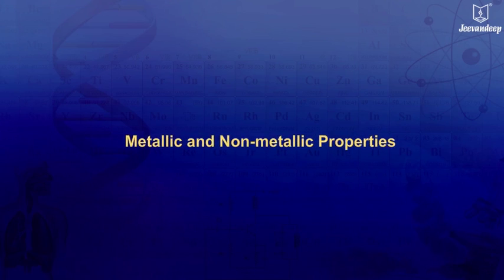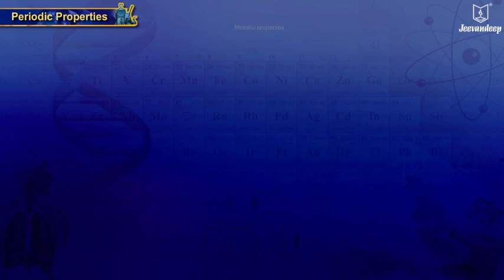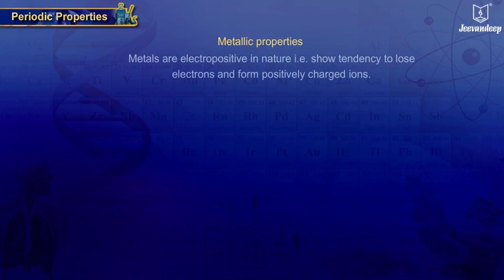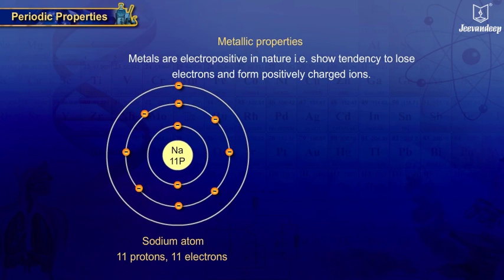Metallic and non-metallic properties. Metallic property: Metals are electropositive in nature, i.e., show tendency to lose electrons.